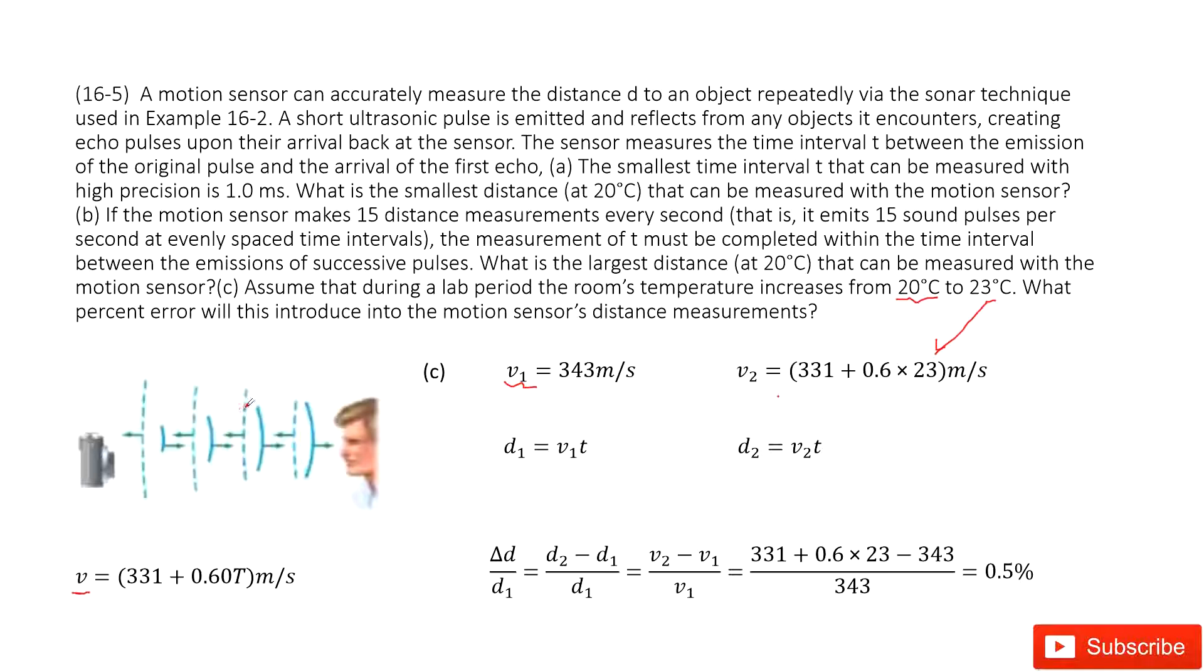Then we look at the distance it traveled using velocity times t. This is d1, and this is d2. Then we find the percent error. It's just d2 minus d1 over d1. And you can see t and t are same, so it becomes v2 minus v1 over v1. Then we input all the known quantities and get the answer.